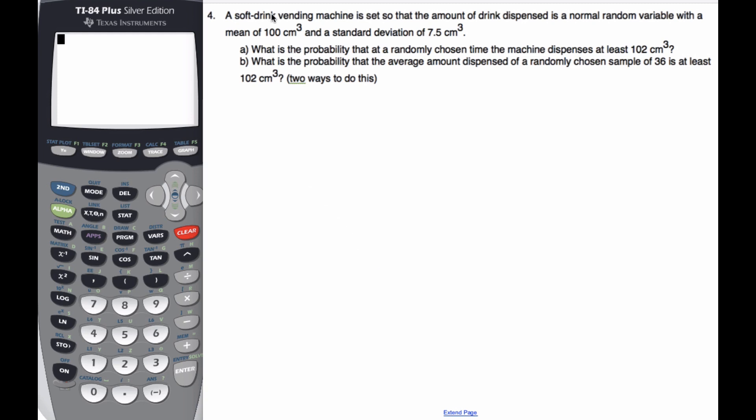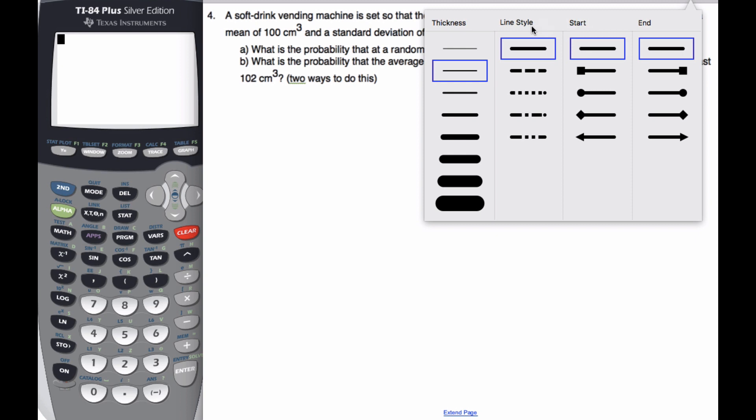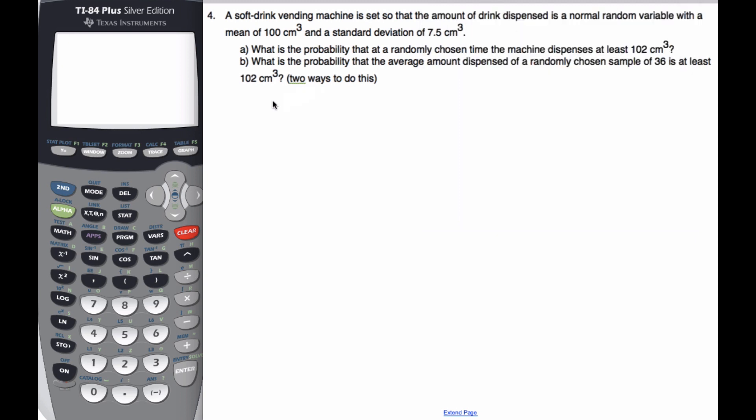In this example, we're going to look at a vending machine that has the amount of drink dispensed as a normal random variable with a mean of 100 and standard deviation of 7.5. So I'm going to consider X has a normal curve with mean 100 and 7.5 squared.